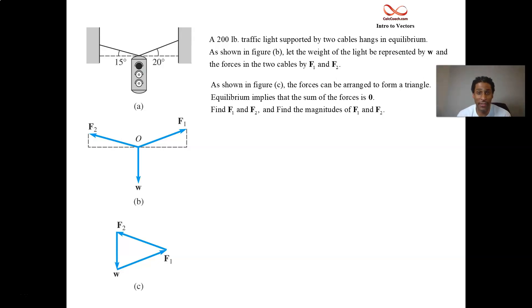This last video in the Introduction to Vectors section looks at a classic problem dealing with adding up vectors. What we have is a traffic light that is supported by two cables. There's tension in the cables so that the traffic light is hanging in equilibrium.